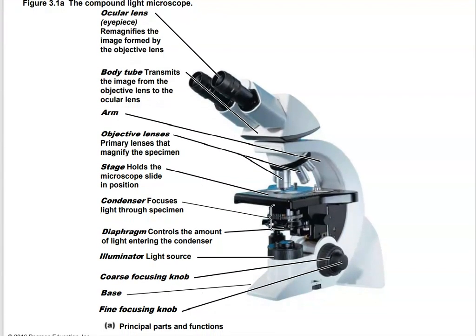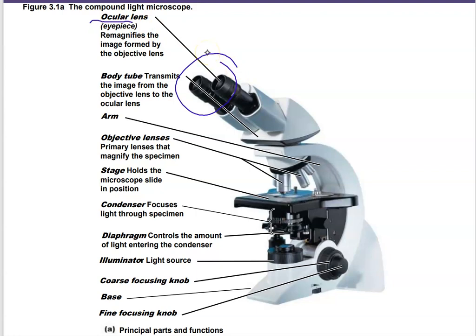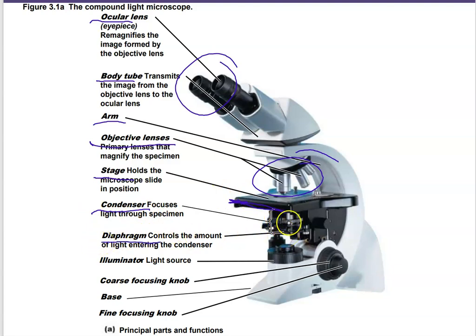Let's review the parts of the compound light microscope. The ocular lens is at the top, then the body tube connects to the arm — which is where you grab the microscope. The objective lenses are below that, and the stage is where you place your specimen. The condenser and diaphragm are below the stage. The illuminator (light source) is at the bottom, along with the coarse and fine focus knobs and the base.